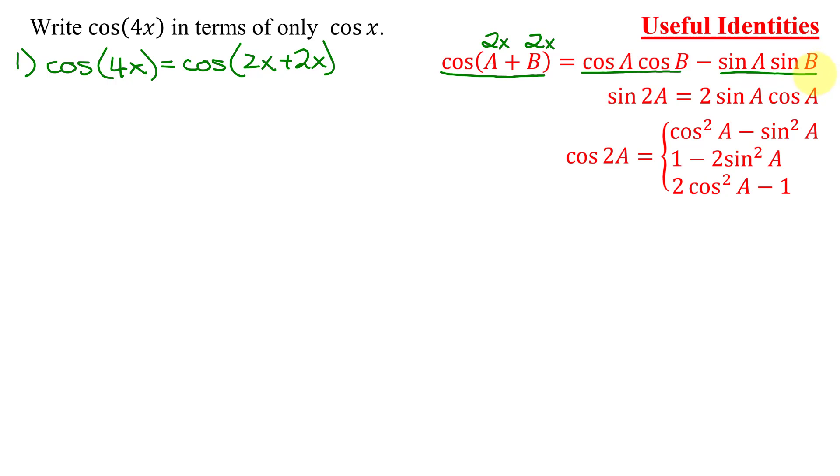But remember, the double angle identity for the sine function involves both the sine and the cosine of that angle. And we're asked to write the cosine of 4x in terms of only cosine x. So let's try a different method to see if it might be a little easier.